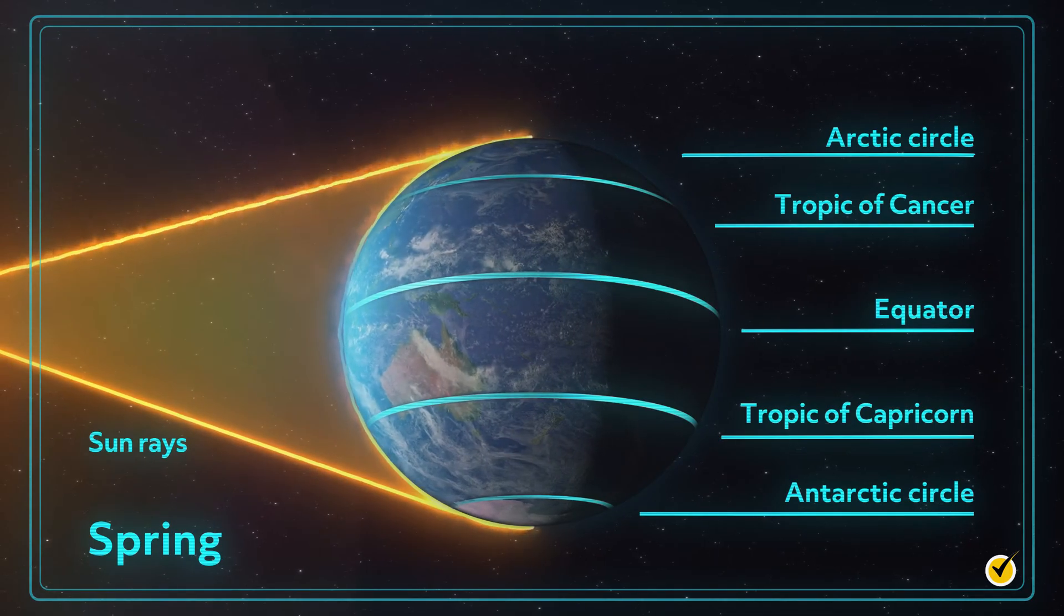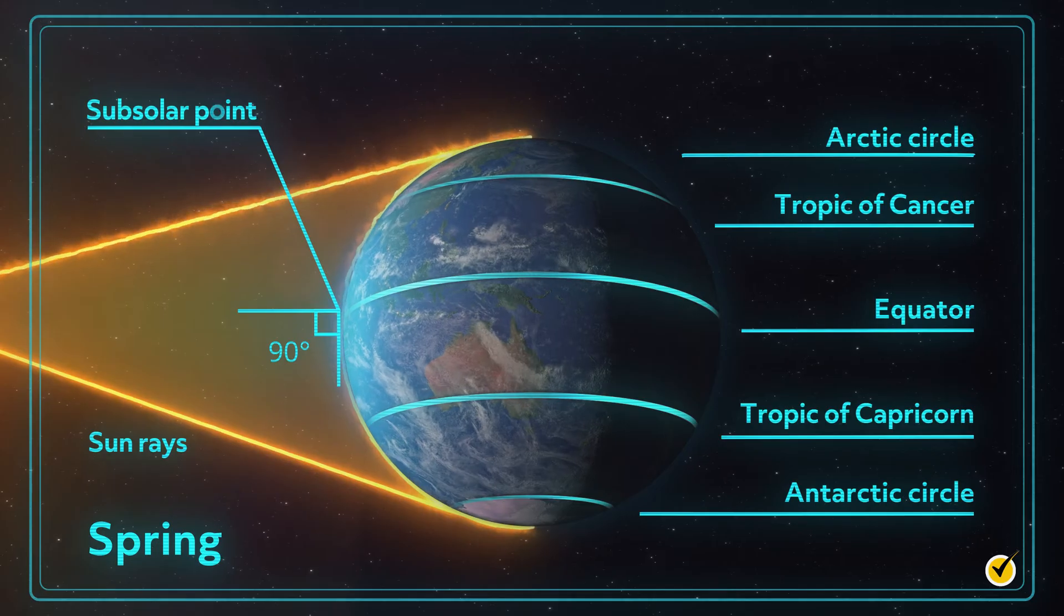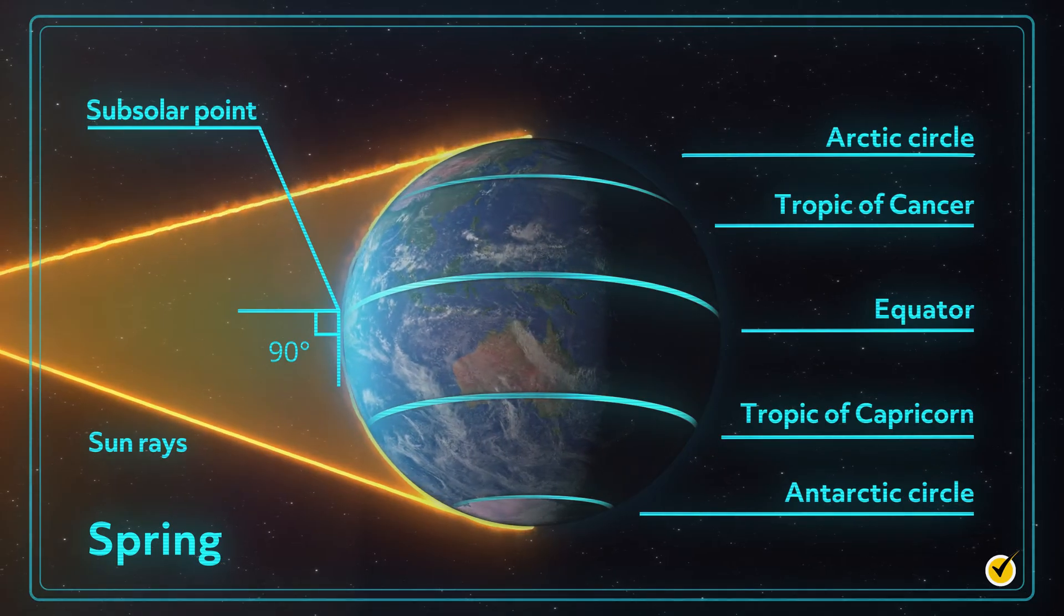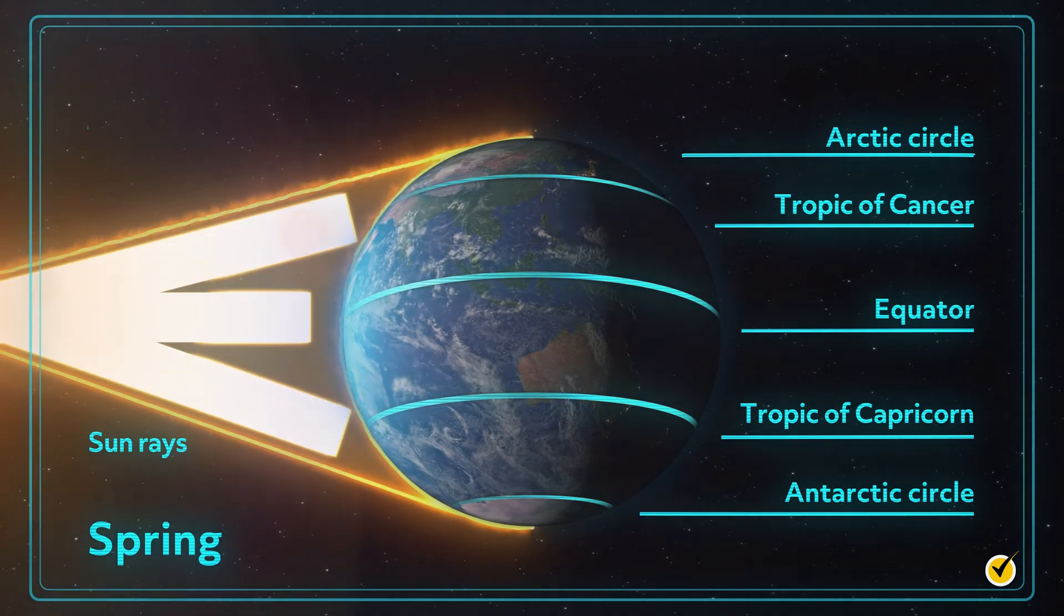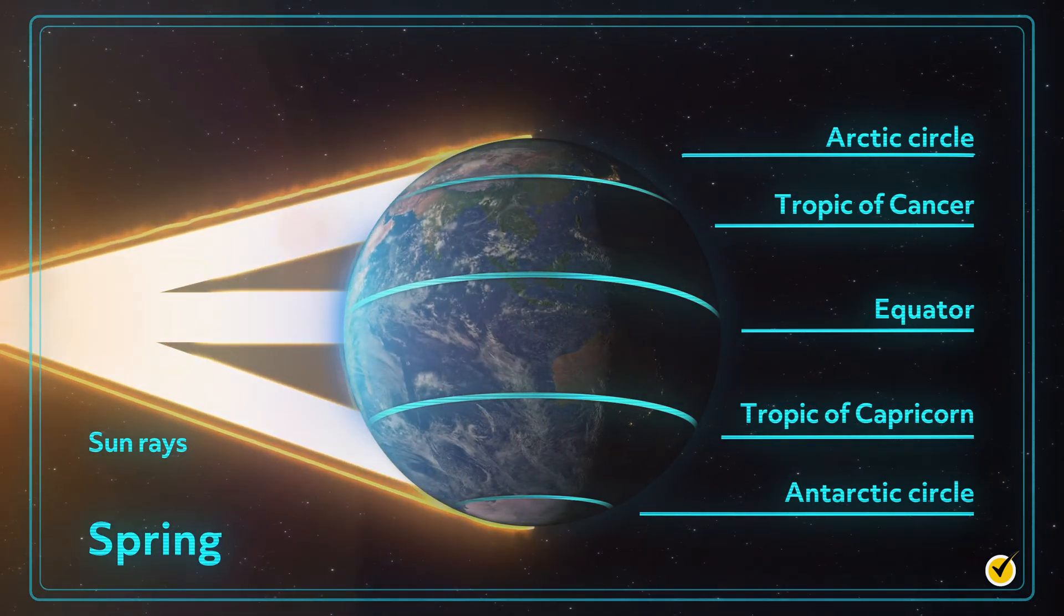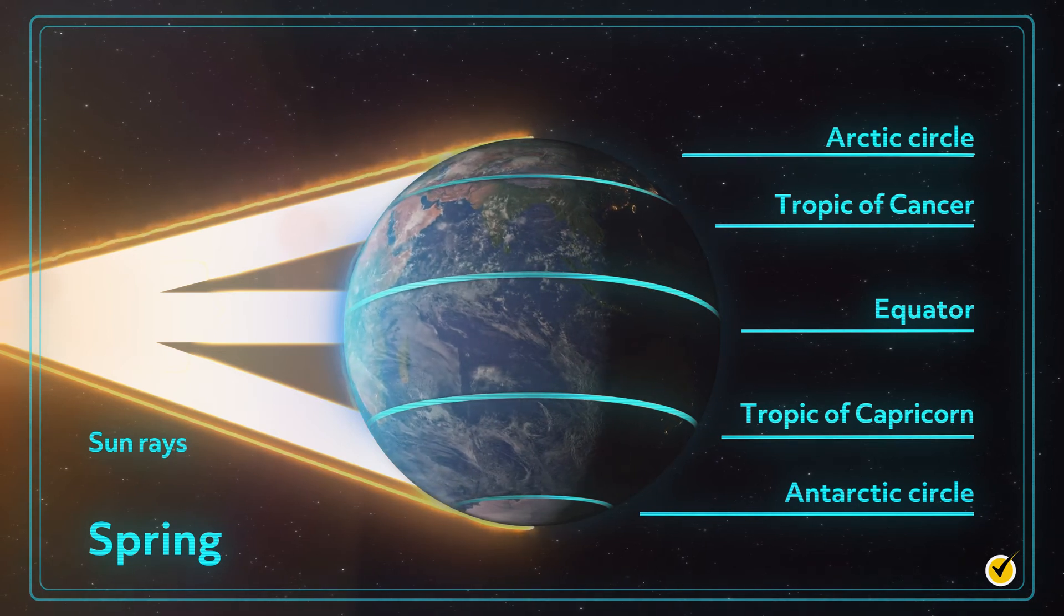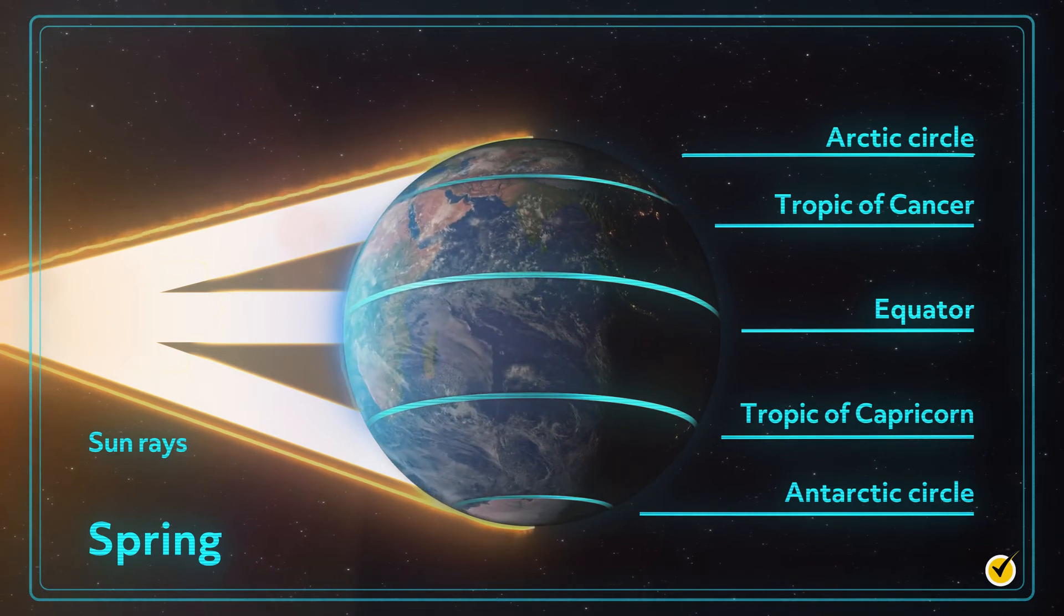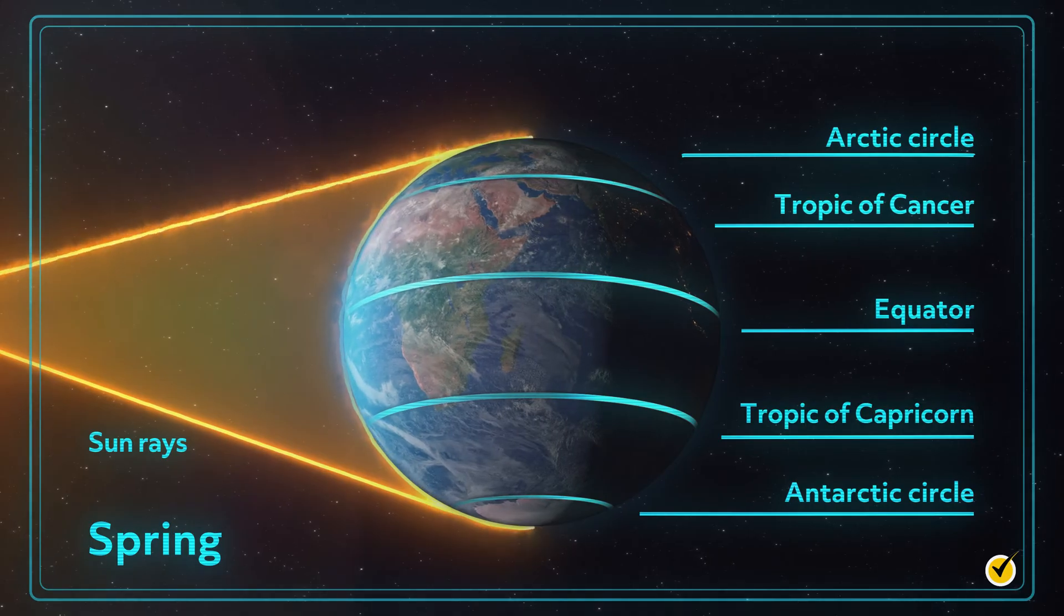If you said the equator, you're right. When the Sun's rays hit a line of latitude at a perpendicular angle, that is where the most direct sunlight is received. When rays hit at less than a 90 degree angle, the sunlight is spread over a much larger area, so heat is dispersed instead of concentrated.